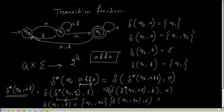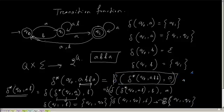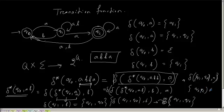So delta of {Q1, Q0} with A: it will be delta(Q1, A) union delta(Q0, A). Delta(Q0, A) is Q1. So the final result of the extended transition function delta star(Q0, ABBA) will be that union.